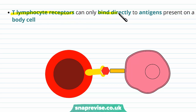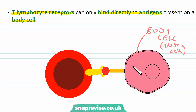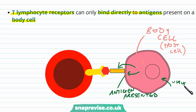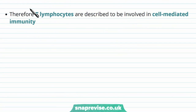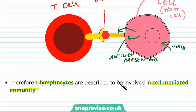The T lymphocyte receptors can only bind directly to antigens which are present on a body cell — one of our own cells, but typically one which has been infected, also called a host cell. When that body cell is infected, it sometimes presents the antigen onto its surface. For example, if a cell was invaded by a virus, it might send the virus antigen into its membrane as a kind of flag to tell other cells it's infected. A T lymphocyte will come along, and if it has the right shape receptor, it will bind to that antigen. Whereas B cells carry out humoral immunity, T lymphocytes are involved in cell-mediated immunity, because they relate to our own infected cells.